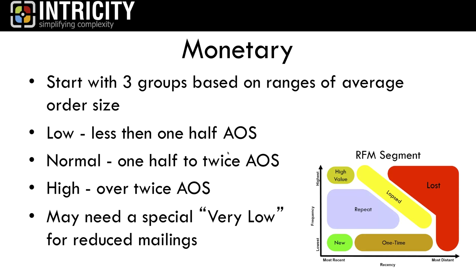Whether you're in insurance, retail, CPG, or pharmaceuticals, the models may be different but CLV is CLV — it's customer lifetime value. On the monetary side we look at low, normal, and high average order sizes, and derive a calculation from it. RFM is very simplistic — it's the most basic way of beginning to do customer lifetime value. We'll then break things into cells: the best cells might be identified as A's, then B's, C's, and D's — a mechanism for segmenting our customers.